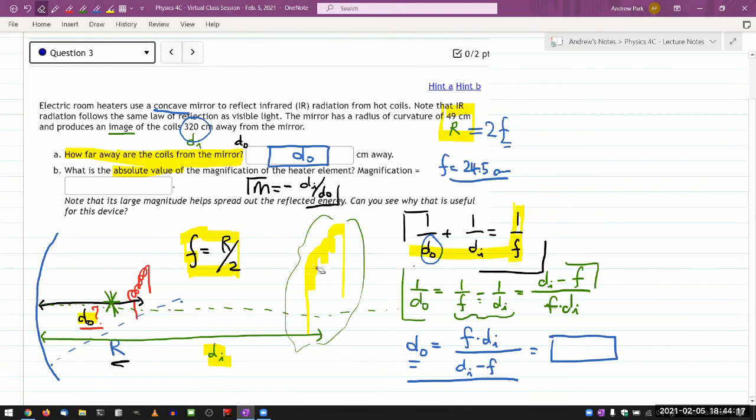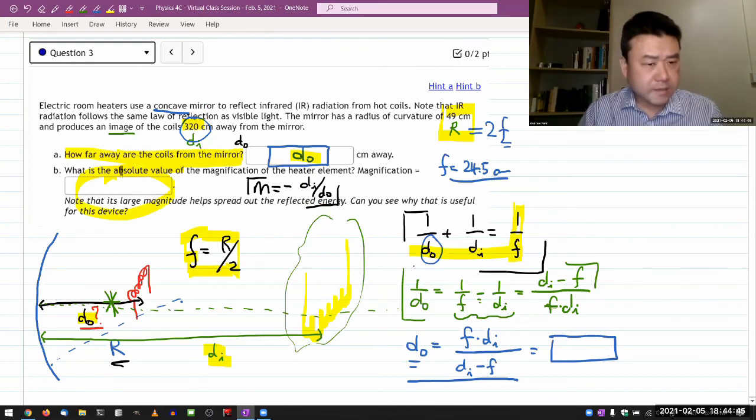And here I'm not really interested in this sign. In fact, I kind of drew this wrong. If this arrangement is what I think it is, I should have an upside down coil here, not right side up. The question is asking for absolute value, since we are not really all that interested in the fact that it's going to be upside down. So it's expecting a positive answer here. You already have DI, you have DO from A, take their ratio and put that in here as a unitless quantity.